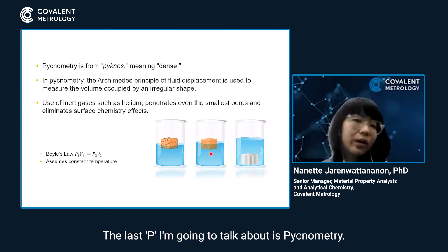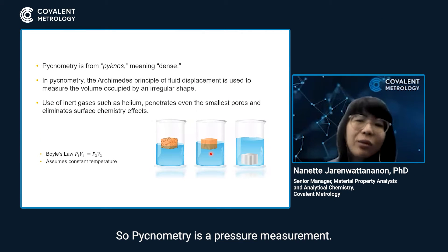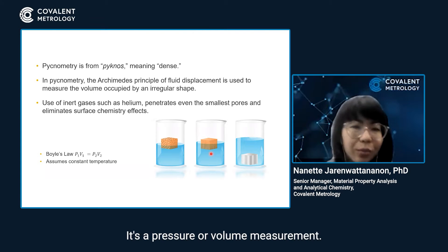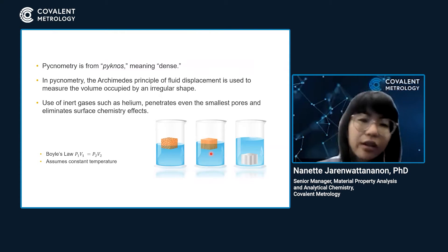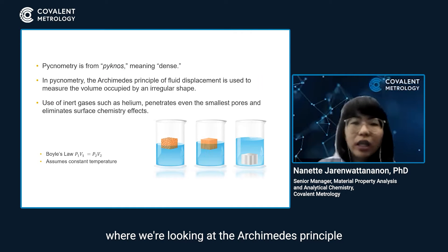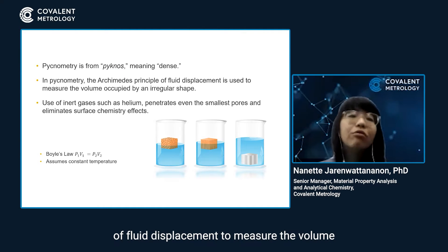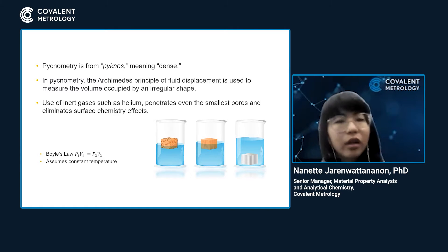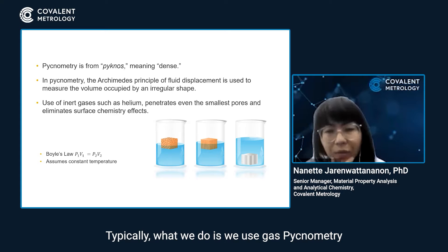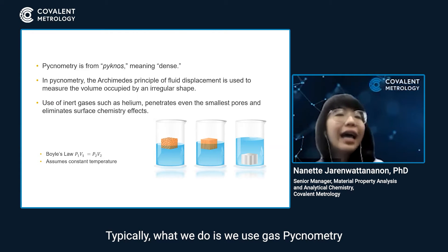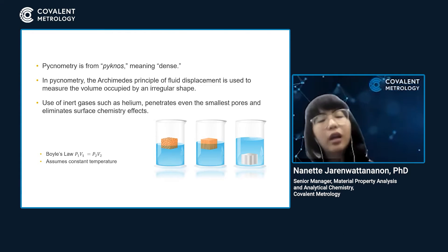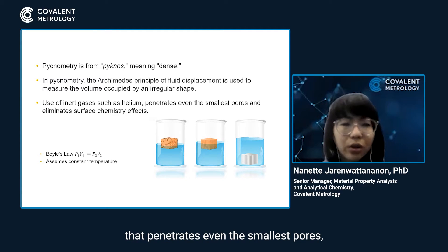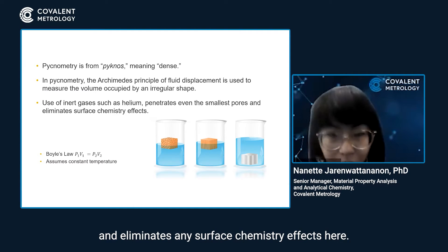The last P I'm going to talk about is pycnometry. Pycnometry is a pressure or volume measurement. In pycnometry, we're looking at the Archimedes principle of fluid displacement to measure the volume occupied by an irregular shape. Typically, we use gas pycnometry because we can use helium gas — it penetrates even the smallest pores and eliminates any surface chemistry effects.